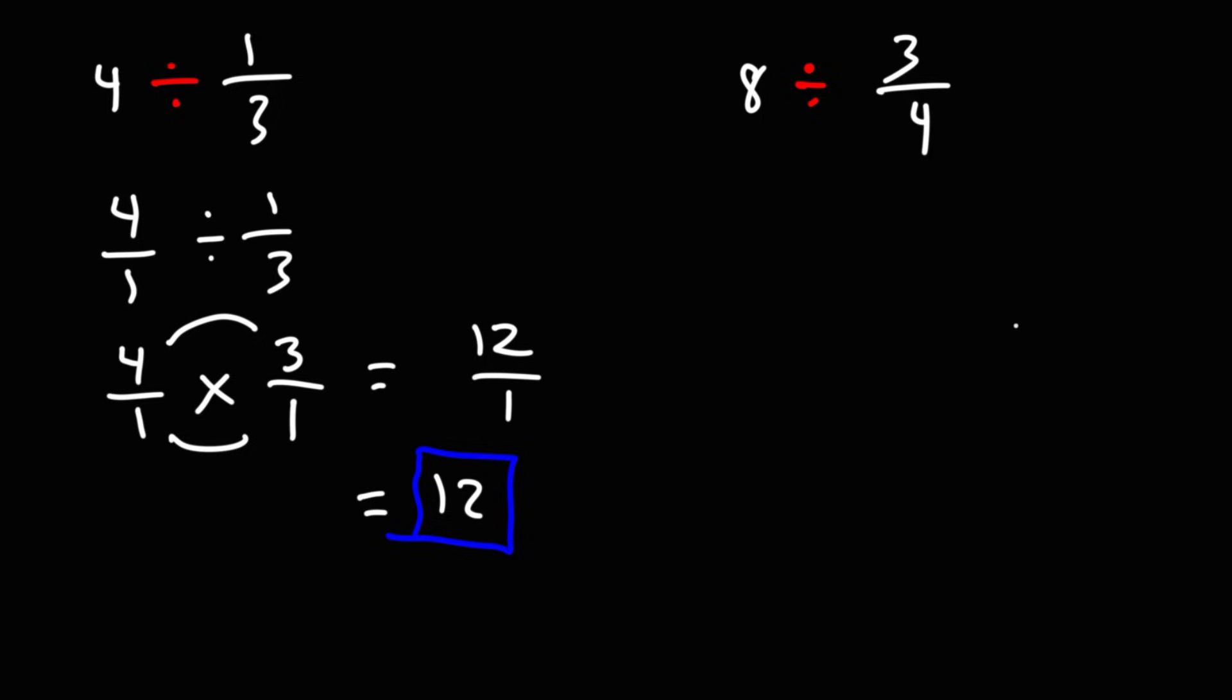Let's do the same for the second problem. Convert 8 into a fraction by putting it over 1. Then using keep change flip, we'll keep the first fraction the same, change division to multiplication, and flip the second fraction.